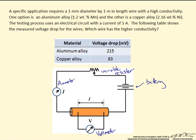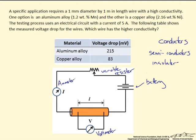Conductivity is a characteristic of a material that is indicative of the ease with which that material is capable of conducting an electric current. This also helps classify materials into three groups: conductors, which conduct electricity well; semiconductors; and insulators. Insulators are the opposite of conductors, whereas semiconductors bridge the gap between the two.